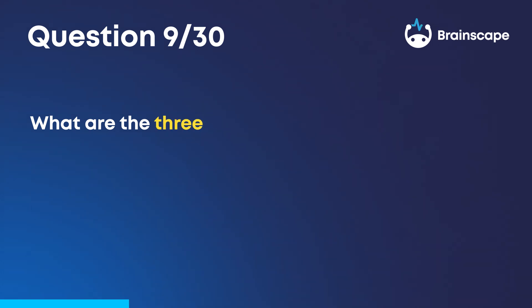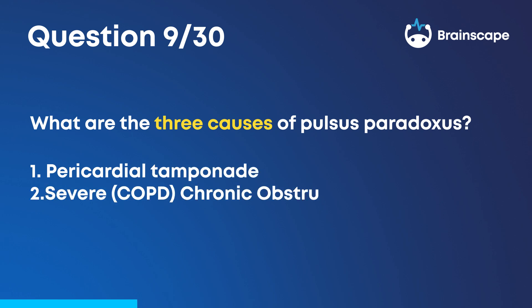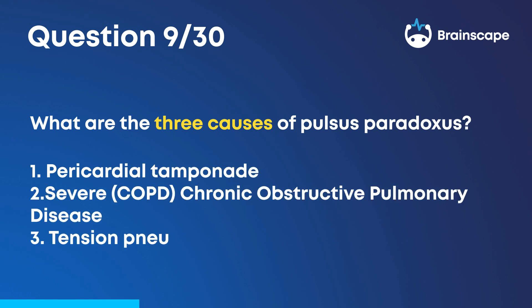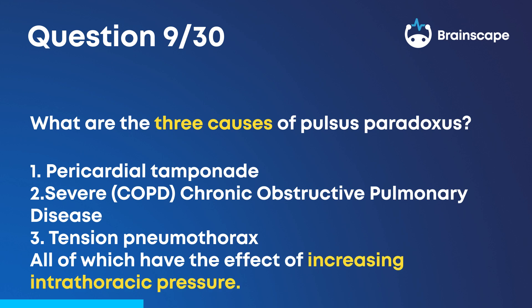Question 9. What are the three causes of pulsus paradoxus? Pericardial tamponade, severe chronic obstructive pulmonary disease, or tension pneumothorax, all of which have the effect of increasing intrathoracic pressure.